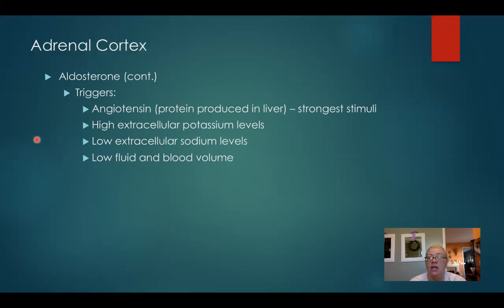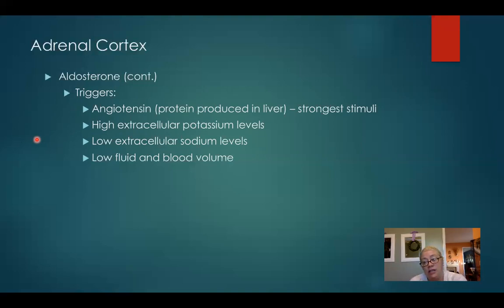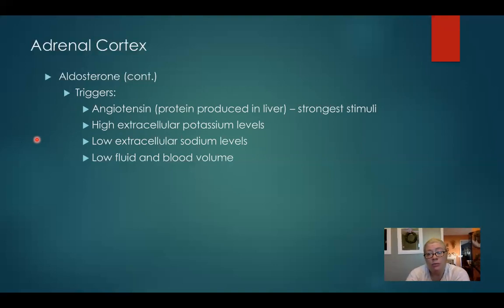Angiotensin is the strongest stimulus for the release of aldosterone. Other stimuli include high extracellular potassium levels — triggering aldosterone to cause the kidneys to excrete that potassium. Low extracellular sodium levels also trigger aldosterone, causing the kidneys to reabsorb as much sodium as possible. Low fluid and blood volume will also trigger aldosterone — low blood volume leads to lower blood pressure, which brings about this chain of events resulting in the kidneys retaining more water, increasing blood volume, and then increasing blood pressure.